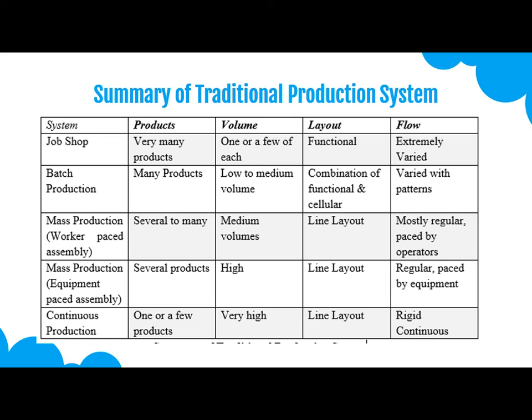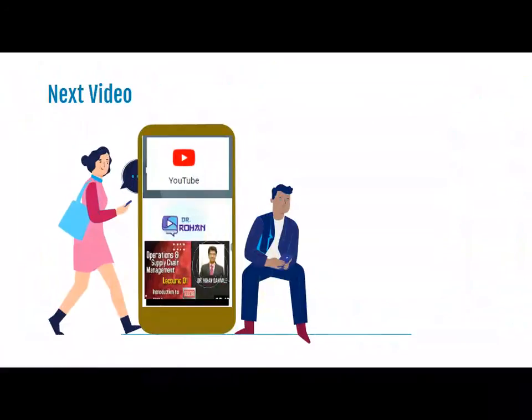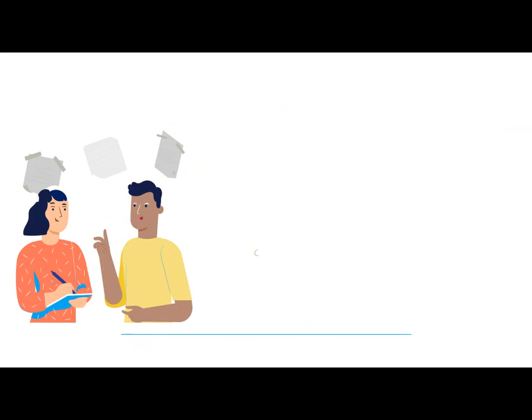For each system in detail — job shop, batch production, mass production, and continuous production — you can refer to my previous videos. This is the book of Simba Publication, which you can refer to. In the next video, we will learn about continuous flow production.